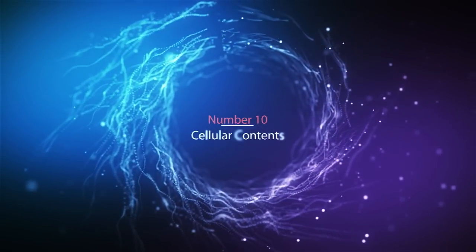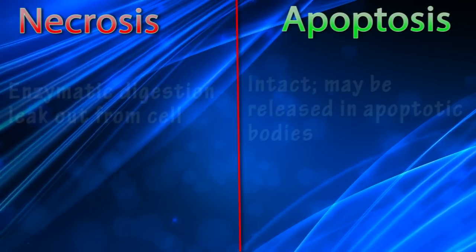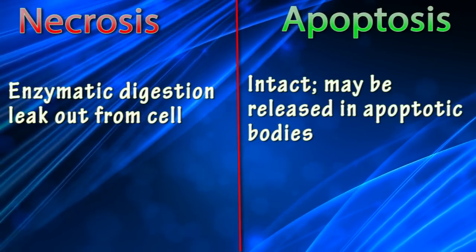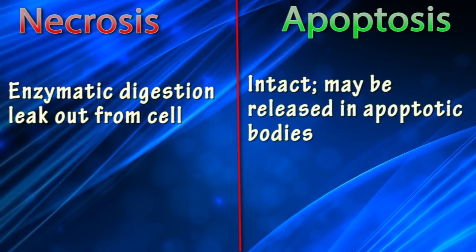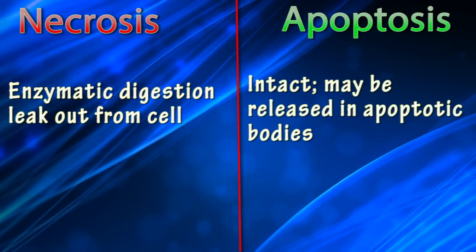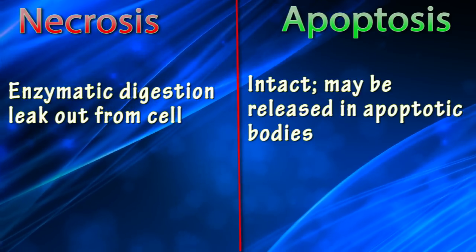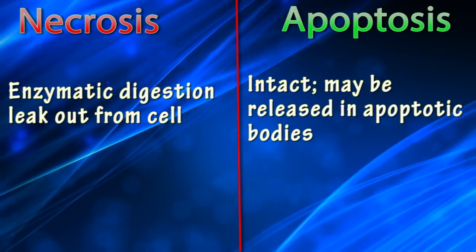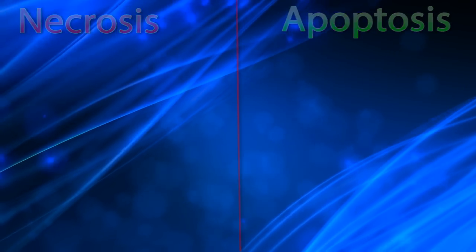Difference number ten: cellular contents. In necrosis, cellular contents are digested by enzymes and may leak out from cells. But in apoptosis, contents remain intact and may be released in apoptotic bodies.